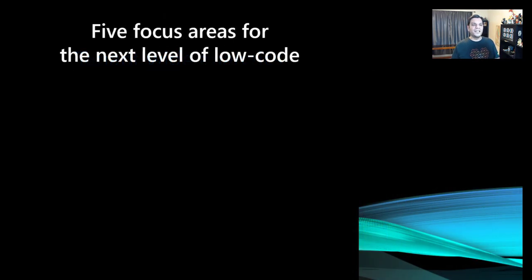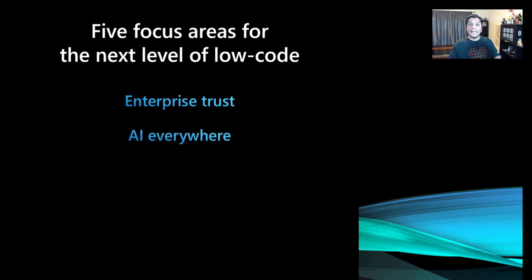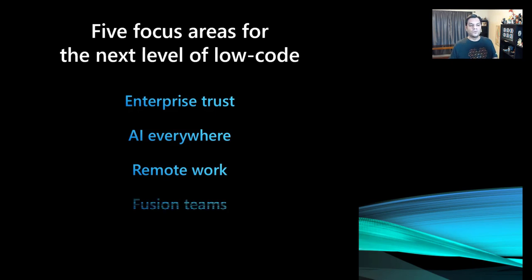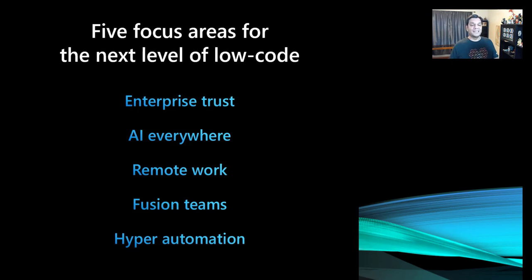At the end, Charles Lamana ended with five focus areas for the next level of low-code enterprise: first, trust — if you're using it at enterprise level you should have the tools for enterprise to trust those apps; second, AI everywhere — we've seen so many places where AI is going to be leveraged; third, remote work — now pretty much part of our lives and they want to make sure new things take care of that flexibility; fourth, fusion of teams — the concept of low-code developers and professional developers working together; and fifth, hyper automation — speeding up the process and automating it. I really like that they have a goal in mind and every new release needs to have all of these options covered.